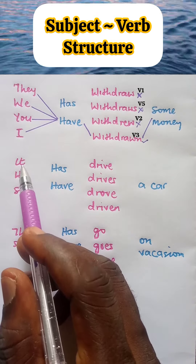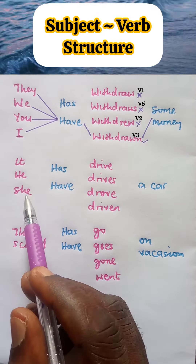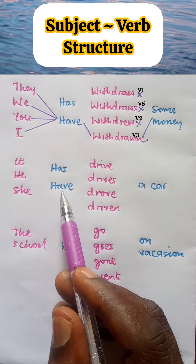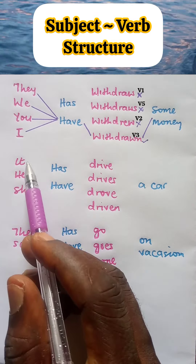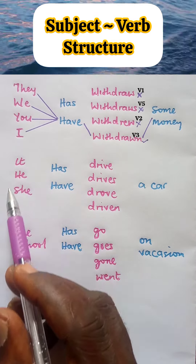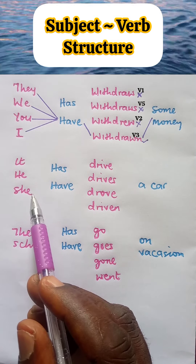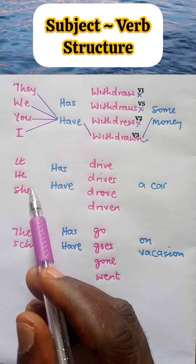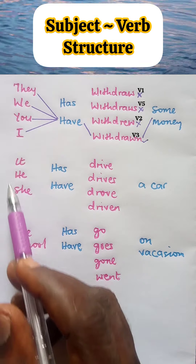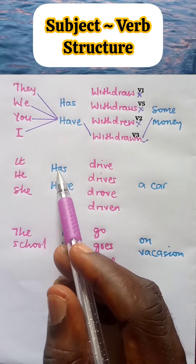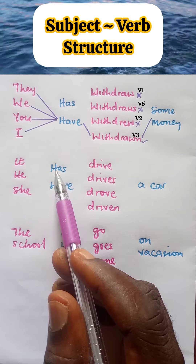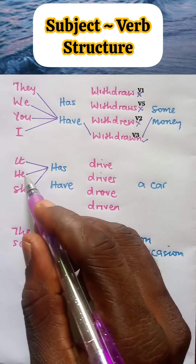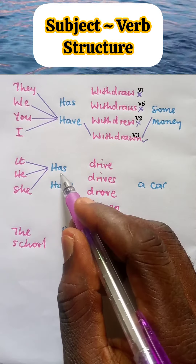Next: it, he, she — has or have? These are singular subjective pronouns, and so they take singular verbs. It follows that these go with has. So that we have: it has, he has, she has.